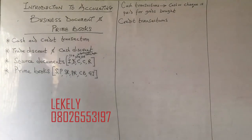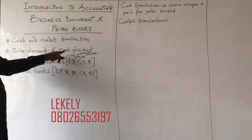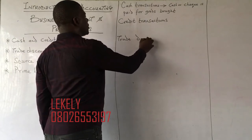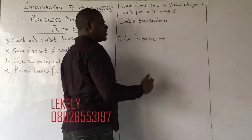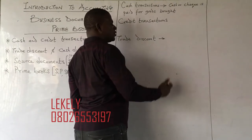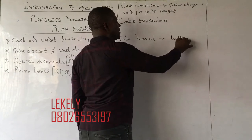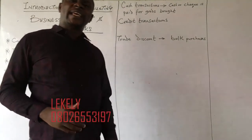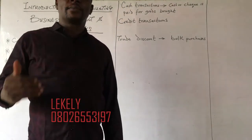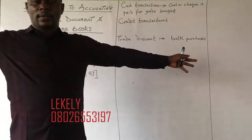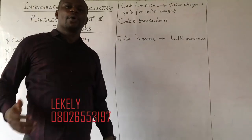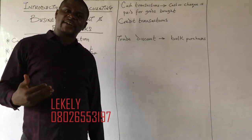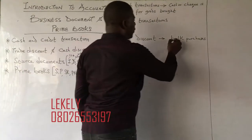The next thing we are going to look at is trade discount and cash discount. Trade discount is the type of discount given by the seller to the buyer for bulk purchases. That is, when a buyer buys something from a seller in bulk, the seller gives a discount. The keyword for trade discount is bulk purchases.